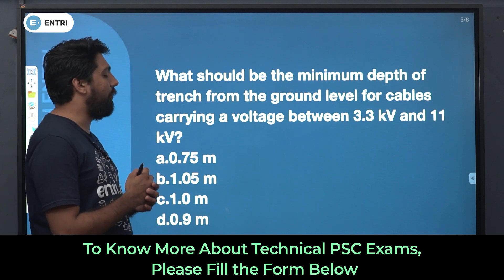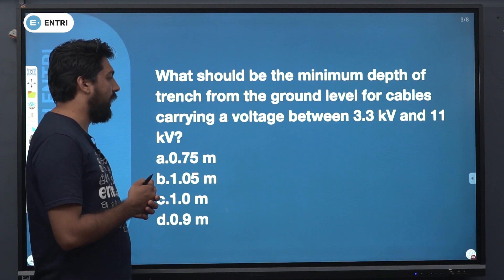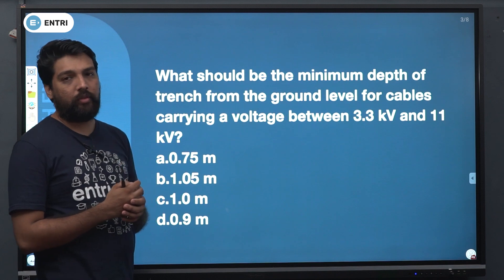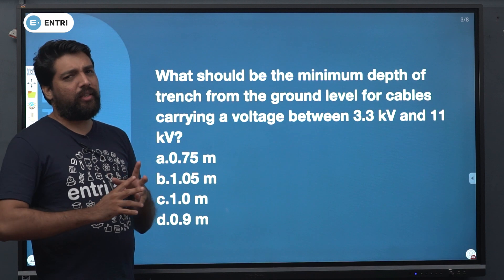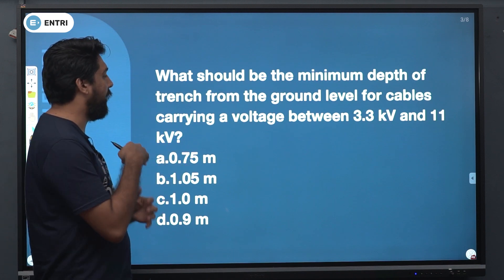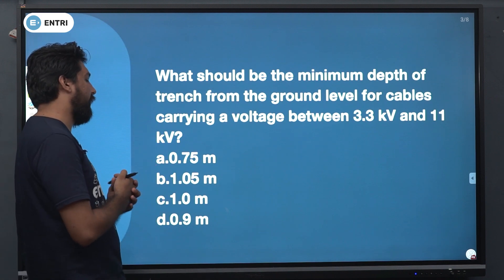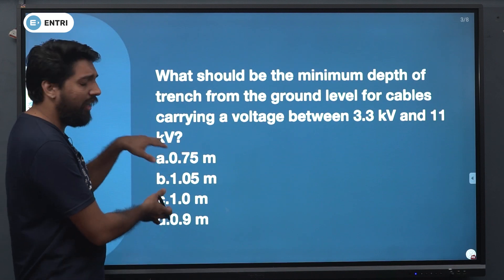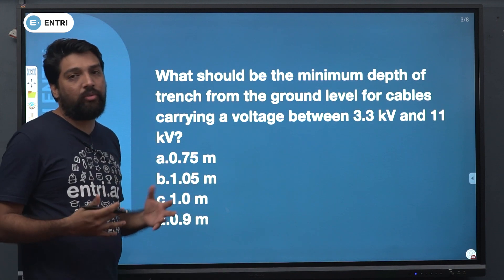What should be the minimum depth of trench from ground level for cables carrying a voltage between 3.3 kV and 11 kV? The options are: 0.75, 1.05, and 1.0. These are very narrow values, with no assumption at all.